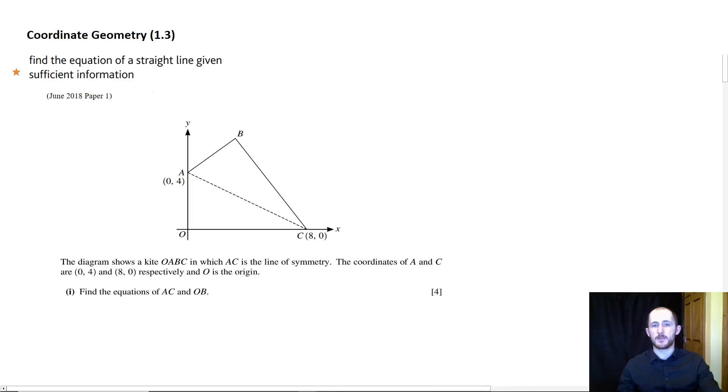Hello and welcome to Flip Academy. Today we're going to be looking at the Coordinate Geometry section of the CIE A-level Maths Specification. So let's just get into it. The first spec point that we're going to go through is we need to be able to find the equation of a straight line given sufficient information.